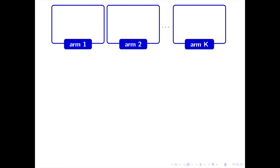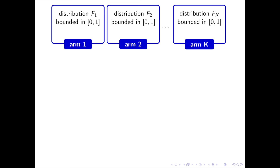Let's start with some quick background on bandits. In the stochastic bandit problem, there are k arms denoted by 1, 2, …, k, each associated to a probability distribution f1, f2, …, fk. The arm distributions fj are bounded in [0,1] and have expectations µ1, µ2, …, µk.